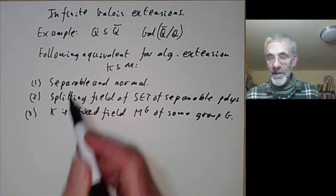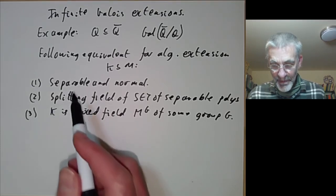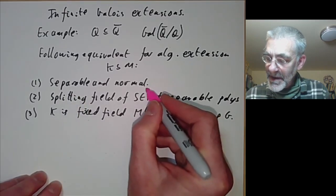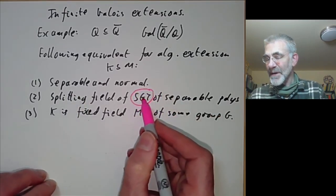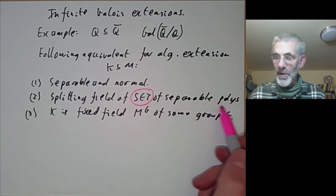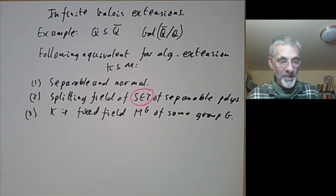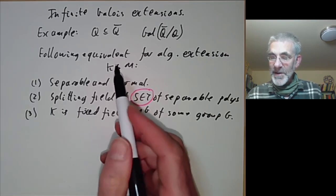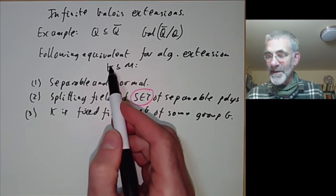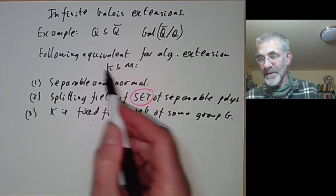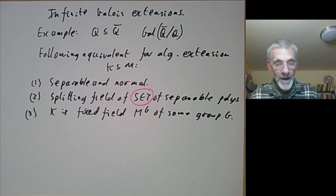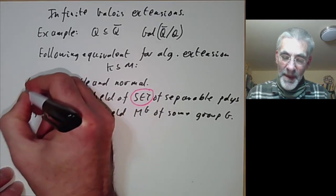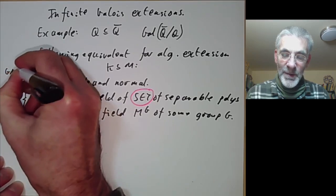These three conditions are almost the same as the conditions for a finite extension to be Galois. The only difference is that instead of just a single separable polynomial, we need a set of separable polynomials — obviously, a single separable polynomial's splitting field is a finite extension. One condition we haven't got is that the automorphism group equals the degree, which doesn't make sense when the degree is infinite. For infinite extensions, these three conditions are all equivalent and we say an extension satisfying them is a Galois extension.